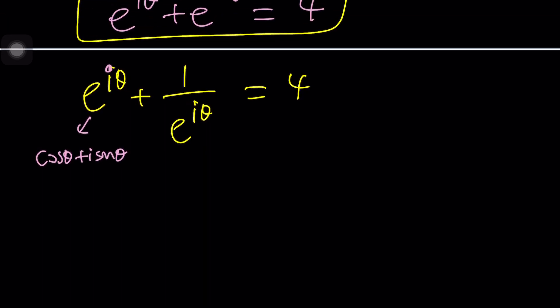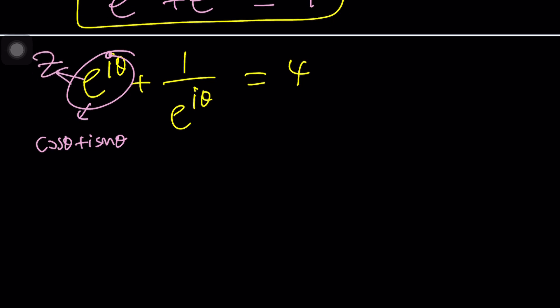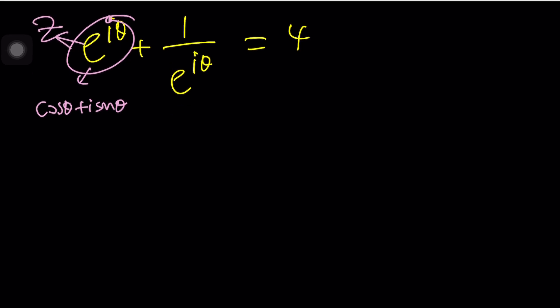So what do we do? We call this something. How about Z? Because we haven't used Z. So if Z is equal to E to the i theta, we're going to get Z plus one over Z equals four. Now, do you think Z is going to be real? And let me tell you, yes.